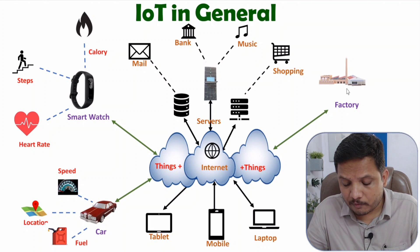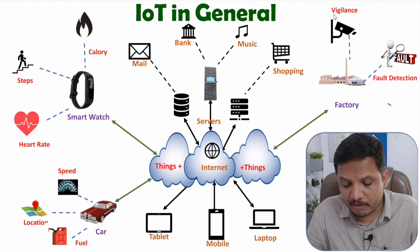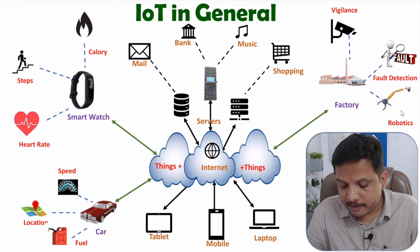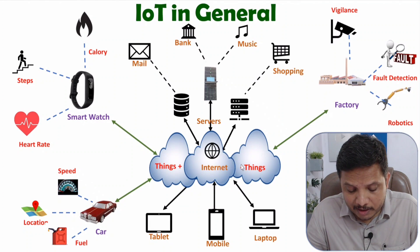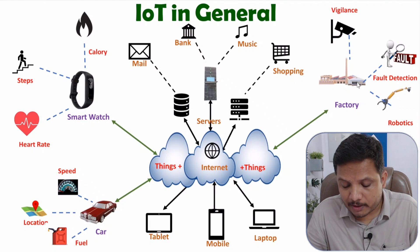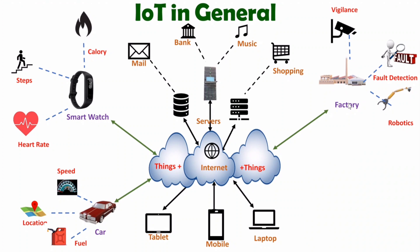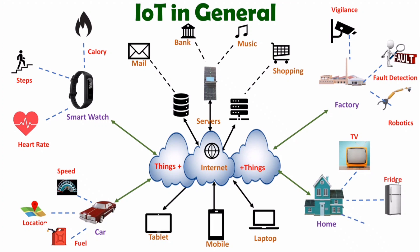Another example is a factory. With a factory there can be varieties of operations like vigilance control, fire detection, and robotics. All this data can be uploaded on internet with the use of IoT, and with this IoT application we can optimize the performance of the factory. One more example is a smart home — in a smart home we can have television, fridge, and security system, and all this data of devices can be uploaded on internet.